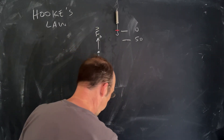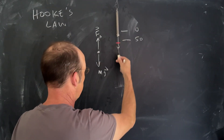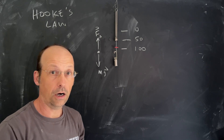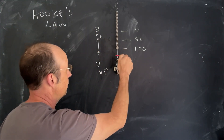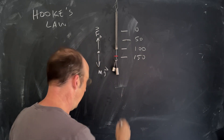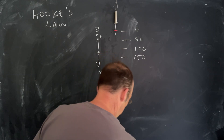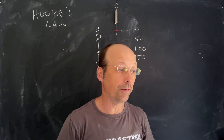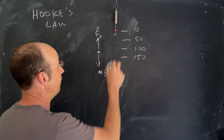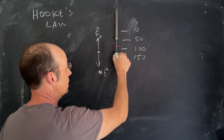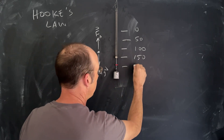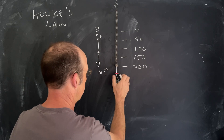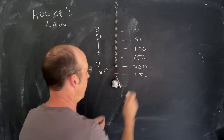Now I'm going to put a 100 gram mass on there, then a 150 gram mass adding those together and collecting data. Then 200 grams, then 250, and finally 350 grams. These are all in units of grams, collecting data to make a graph.